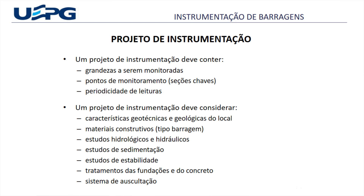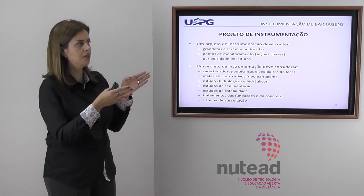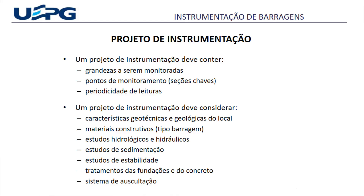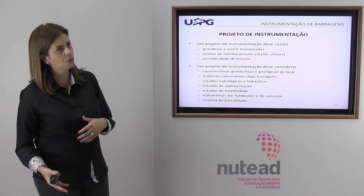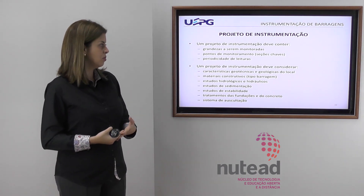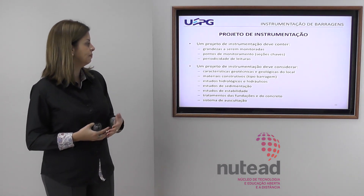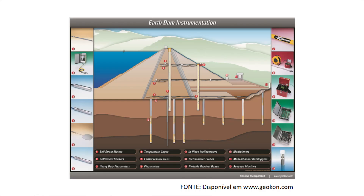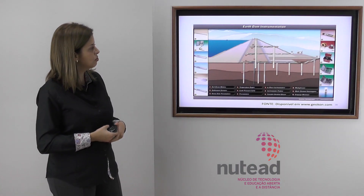O projeto de instrumentação deve conter as grandezas a serem monitoradas, os pontos de monitoramento — através de seções onde se colocam os instrumentos — e a periodicidade das leituras. Devem ser consideradas características geotécnicas e geológicas do local, os materiais construtivos, o tipo de barragem, além de estudos hidrológicos, hidráulicos, de sedimentação, de estabilidade, tratamento de fundação e do concreto, e o sistema de auscultação como um todo.